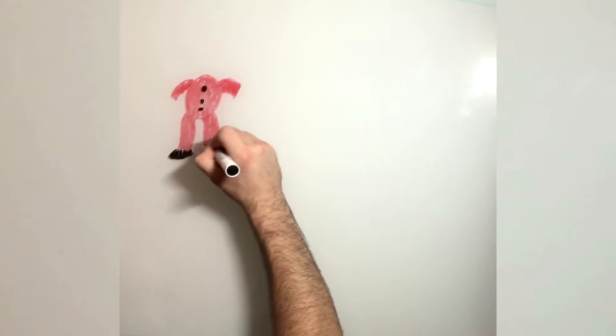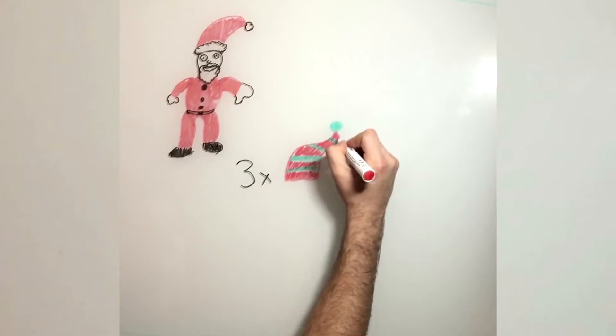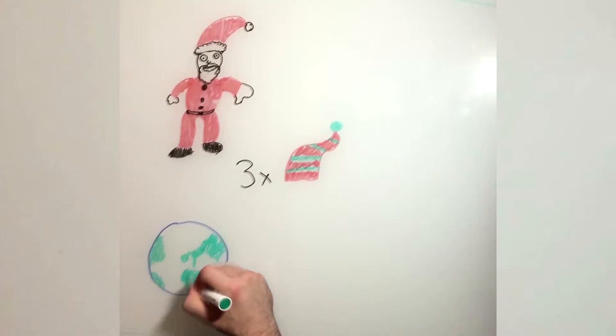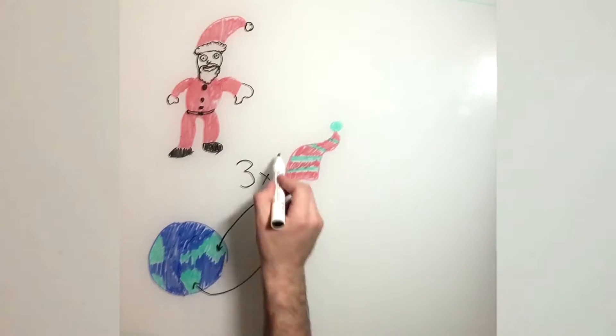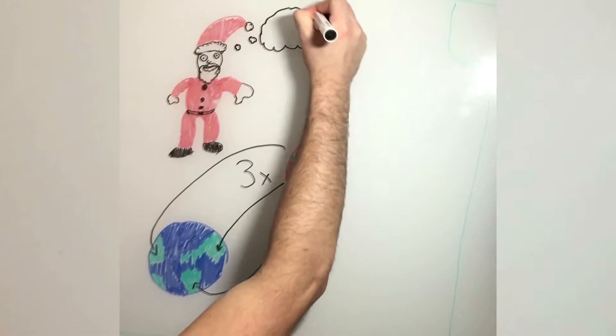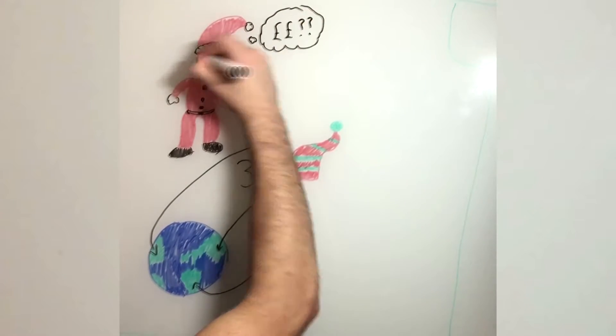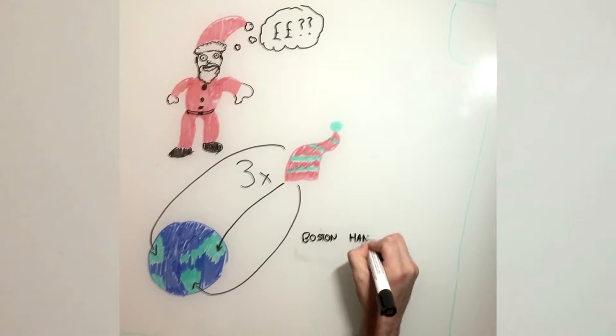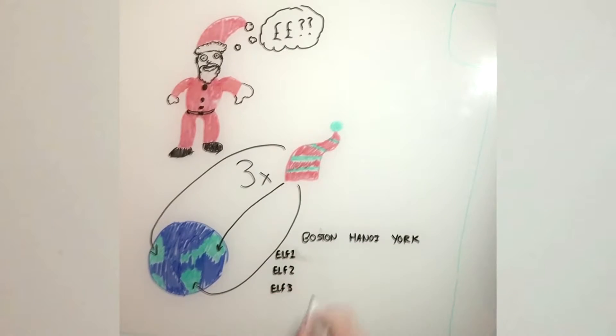For this example, we have Santa and his three elves. Each of his elves charges a unique price to each location they travel to. The aim for Santa is to find a combination of which elf should travel to each location in order to keep the total price for him the lowest. This, in the simplest form, is the assignment problem. This is what the Moncrie's algorithm will help us solve.